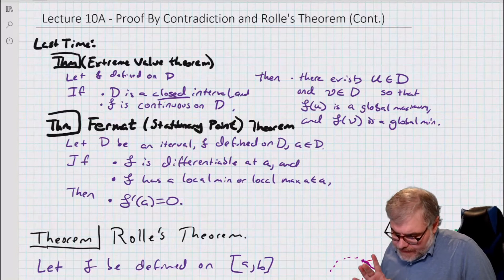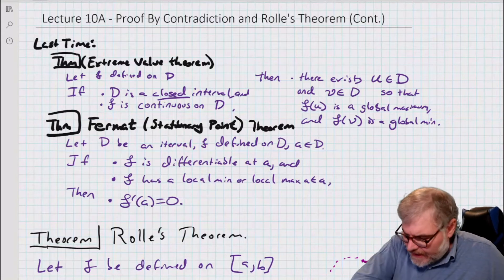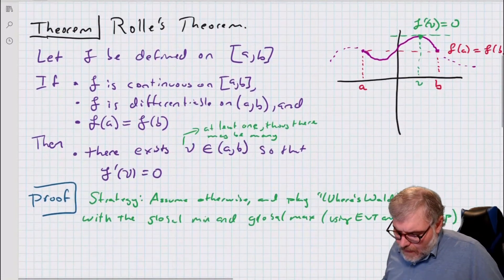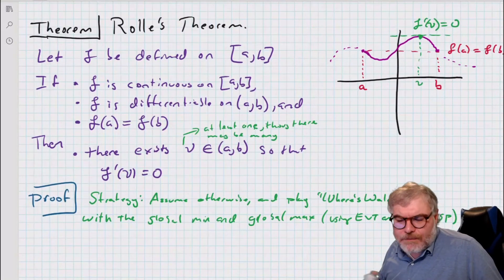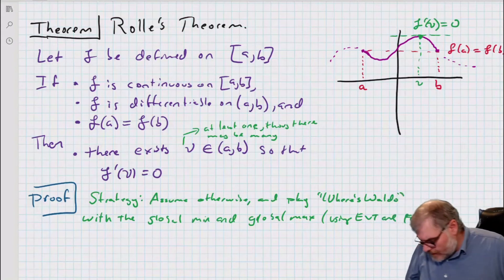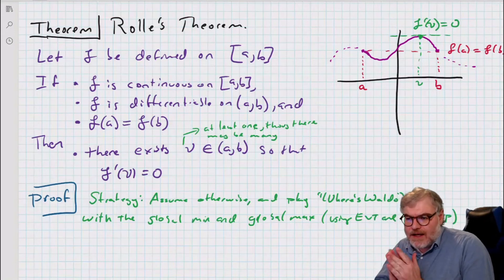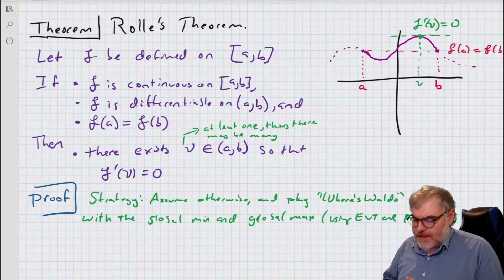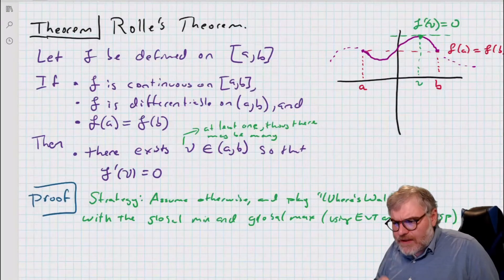The point of doing all that is to prove Rolle's theorem using proof by contradiction. Last time we did the Extreme Value Theorem and Fermat's theorem; today we're going to do Rolle's theorem. So if F is continuous on a closed interval and differentiable on the open interior, and if F(a) equals F(b) — in other words, if I end where I start — then there's some point in the middle where F′(v) = 0. If I toss a ball up in the air and catch it at the same height, there's some point in the middle where the derivative was zero — I had either a min or max in the middle.